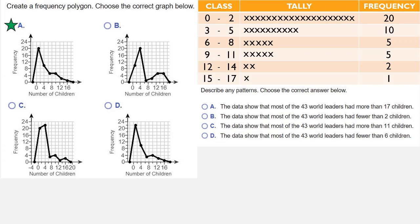Does the data show that most of the 43 world leaders had more than 11 children? Well, more than 11 children on our chart would be between 12 and 17. And that was only 3 of these world leaders that fell into that category, which is definitely not most of them.